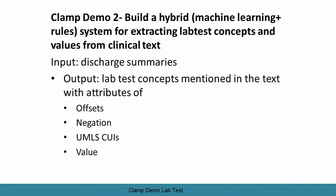Hello everyone. This video demonstrates how to use CLAMP to build a hybrid system which combines machine learning and rules to extract lab test concepts and their values from clinical texts. Input will be a collection of discharge summaries, and output could be lab test concepts mentioned in the text with some attributes such as its offset, negation status, UMLS cues, as well as its lab values.